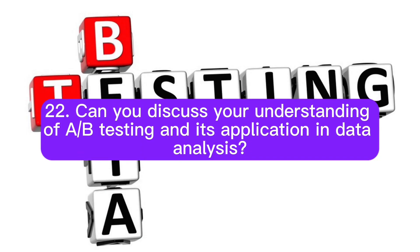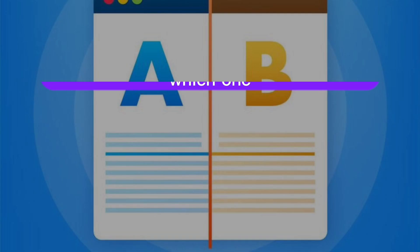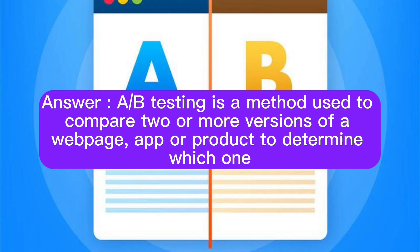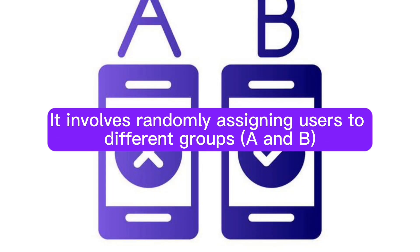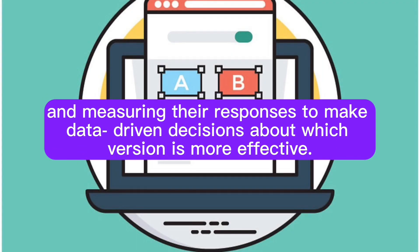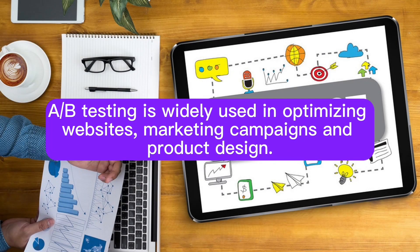Question 22: Can you discuss your understanding of A/B testing and its application in data analysis? Answer: A/B testing is a method used to compare two or more versions of a web page, app, or product to determine which one performs better in terms of user engagement, conversion rates, or other relevant metrics. It involves randomly assigning users to different groups A and B and measuring their responses to make data-driven decisions about which version is more effective. A/B testing is widely used in optimizing websites, marketing campaigns, and product design.